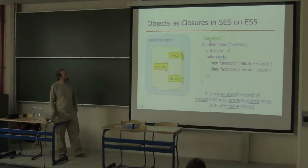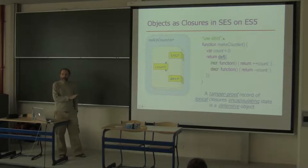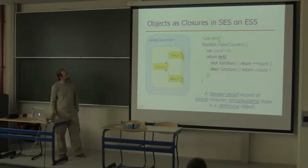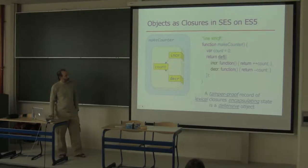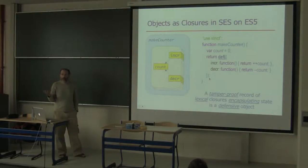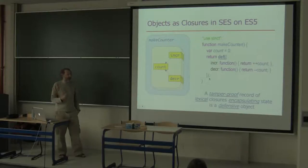ECMAScript 5 brings two new constructs. 'use strict' repairs all the scoping issues so we have genuine lexical scoping and functions become truly encapsulated. The 'def' construct from SES — built on something from ECMAScript 5 — makes the record tamper-proof. Together these give us objects able to defend their integrity: a tamper-proof record of lexical closures truly encapsulating state, a properly defensive object.